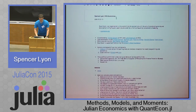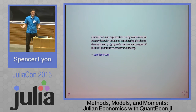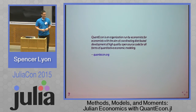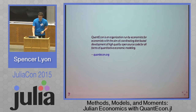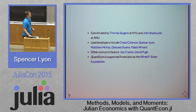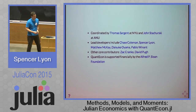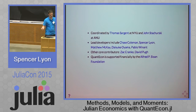I'm going to talk about the QuantEcon project. QuantEcon is an organization run by economists for economists with the theme of coordinating distributed development of high quality open source code for all forms of quantitative economic modeling. That's a quote from the home page of our website, and I think it captures well what we're all about. It's a project coordinated by Thomas Sargent at NYU as well as John Stachurski at Australia National University. There's a team of five core developers right now with a few other core contributors, and we're supported financially by the Sloan Foundation.